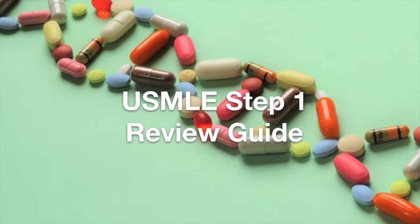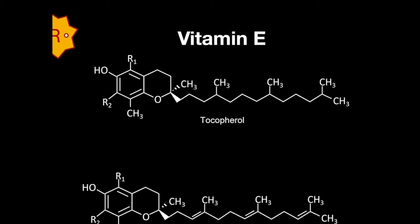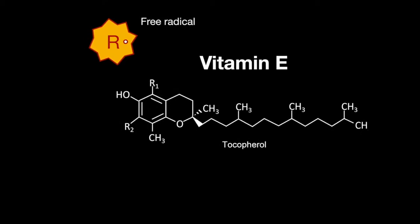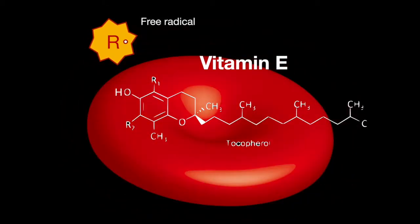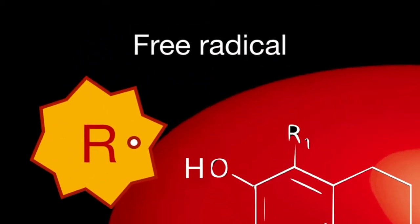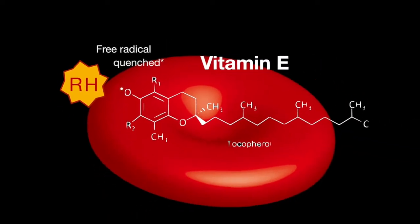Welcome to Step 1 of your study guide. In this lesson we learn about vitamin E, also called tocopherol or tocotrienol. It is an antioxidant that protects the body from free radicals, particularly the red blood cells and membranes.